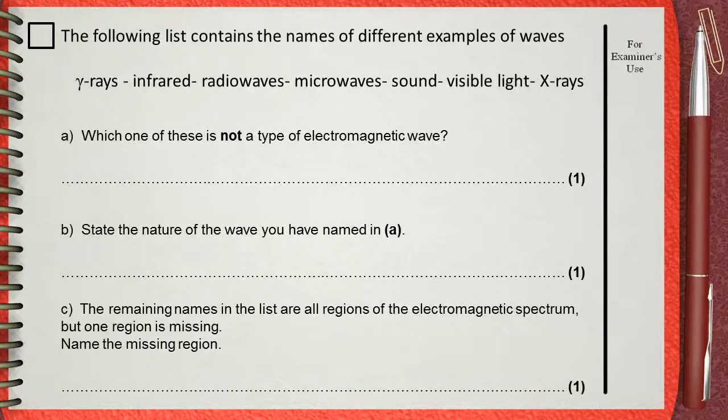The following list contains the names of different examples of waves: gamma rays, infrared, radio waves, microwaves, sound, visible light, and X-rays.